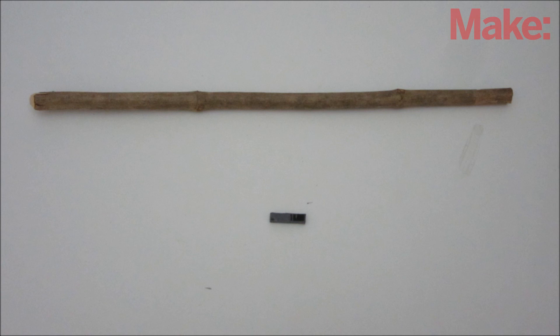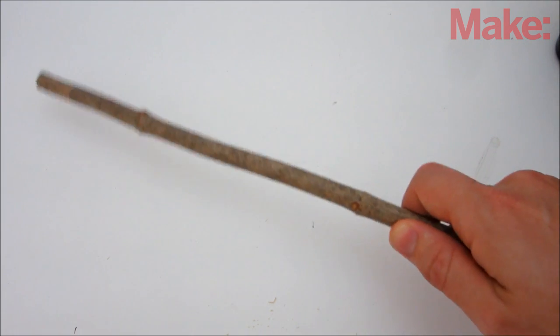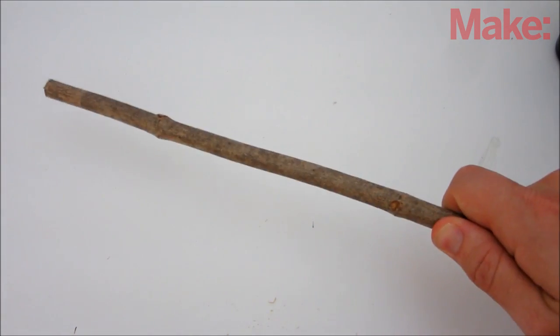My favorite housing for an RFID chip is an ordinary stick. That way you can wave it around like a magic wand, and it will actually unlock your door.